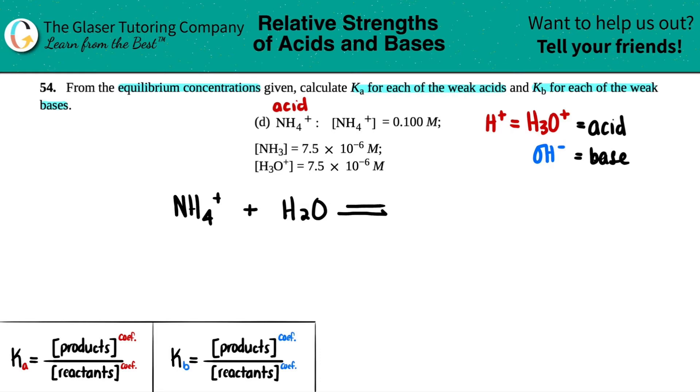This is not a strong acid—it's not on your list of six—so equilibrium is going to happen, and they told us we have equilibrium concentrations.